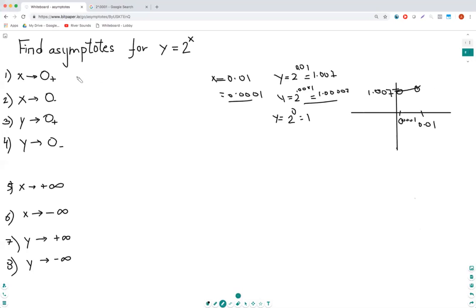So for x tending to 0 plus, y will be 1. As we can see here, there's no real asymptote. It's just the root of this equation. There's no real asymptote.